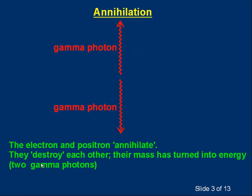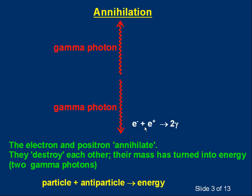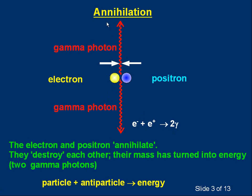The electron and positron have basically destroyed each other. It's not total destruction — there is something left over. Essentially, their mass has turned into energy in the form of two gamma photons. This is a characteristic of a particle and its corresponding antiparticle: they can annihilate and turn to energy. We can write the equation: electron + positron → two gamma photons. In textbooks you'll probably see a diagram showing the electron and positron before and the gamma photons after, all on the same diagram.